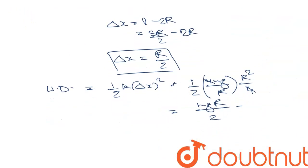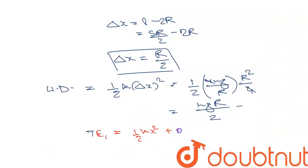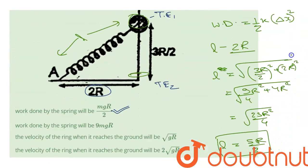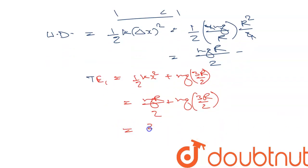TE1 equals the potential energy stored in the spring plus the gravitational potential energy: ½kx² + mg(3r/2). We already found ½kx² = mgr/2, so TE1 = mgr/2 + mg(3r/2) = 2mgR.